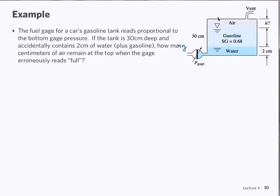So we have here a situation of pressure readings according to different heights of gases. You're told that there's two centimeters of water at the bottom, there's an unknown layer of air at the top, and the whole tank is 30 centimeters, and the gauge reads full.